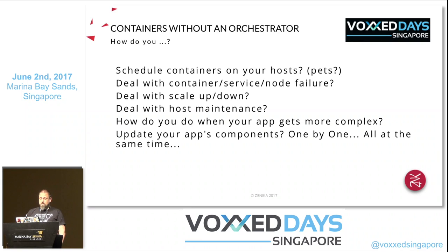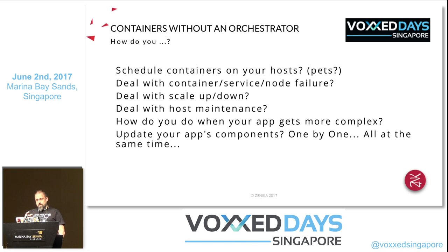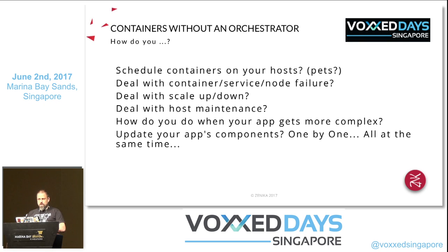Other questions arise when running containers without an orchestrator: How do you schedule containers on your hosts? How do you choose which container runs on which host? How do you deal with failures — whether from your containers, services, or nodes? How do you scale up and down? How do you handle host maintenance, like applying OS patches or upgrading the Docker version? And how do you manage complex applications, especially with the micro-services and cloud-native hype? How do you update your application?